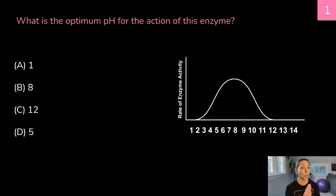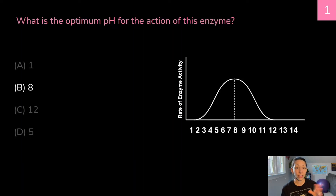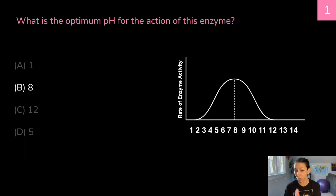Let's do some practice questions. What is the optimum pH for the action of this enzyme? We're given pHs on one axis and rate of enzyme activity on the other. The correct answer is B — pH 8. If we look at the top point of that curve and look down to the closest matching pH, it would be around 8. We can see that pH 1 is too acidic with very little enzyme activity, and anything past 11 or 12 gives no enzyme activity either.